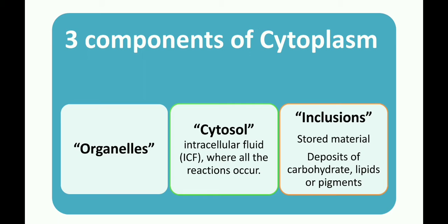Cytoplasm encompasses all the material present inside the plasma membrane, including the organelles, except for the nucleus. Therefore, the liquid within the mitochondria and the chloroplast is also part of the cytoplasm, but not a component of the cytosol. In case of prokaryotic cells, cytoplasm and cytosol are essentially the same thing, because they do not have well-defined organelles or a nucleus present inside their cytoplasmic matrix.